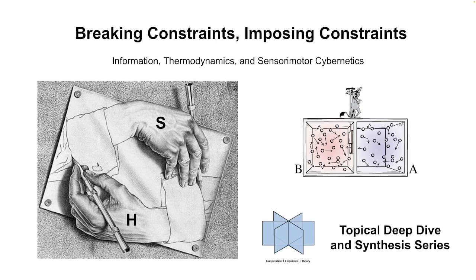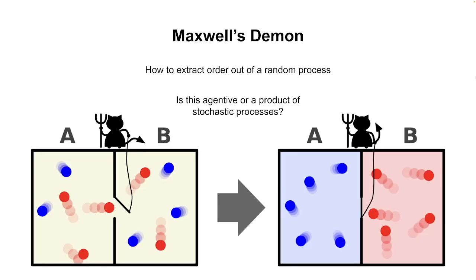The second part is the Maxwell's Demon thought experiment. This was developed by James Clerk Maxwell, who really laid the mathematical foundations of thermodynamics. He asked the question: how do we extract order out of a random process? To do this, he developed this thought experiment called Maxwell's Demon.